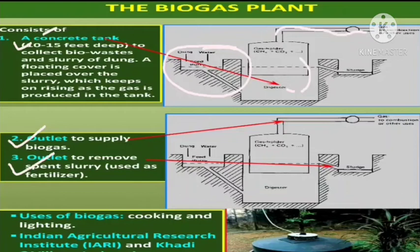Through the outlet pipe we can supply the biogas. There is another outlet — the physical part that remains after digestion in the digester is used as activated sludge or as fertilizer. This slurry is released through another outlet and used as a fertilizer.